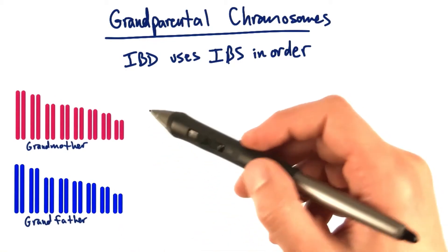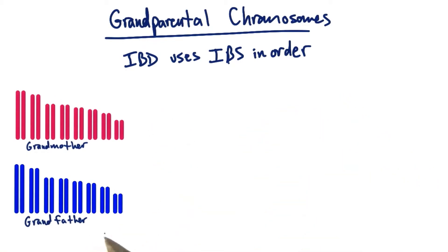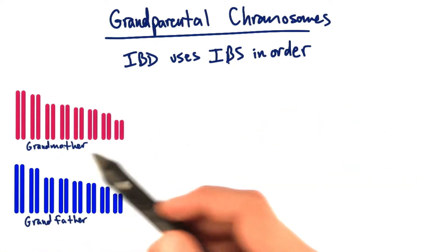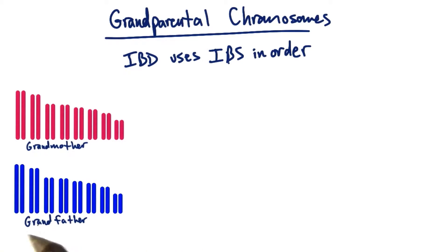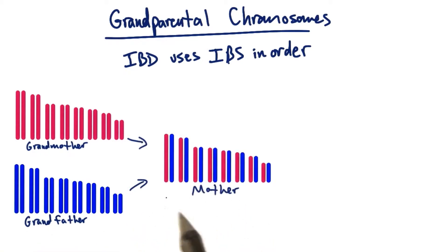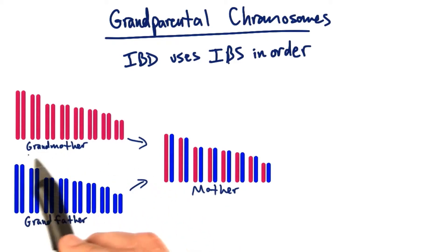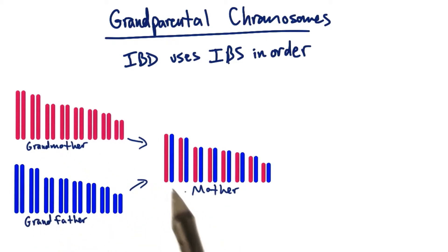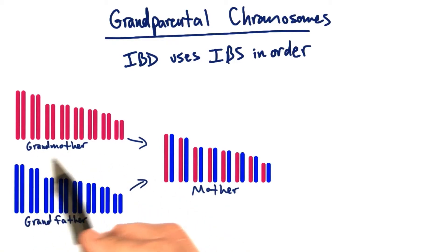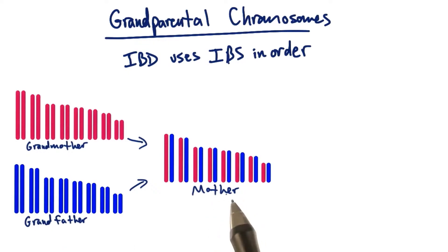For example, let's think about the chromosome pieces you inherited from your grandparents. Here we have your grandmother's chromosomes and your grandfather's chromosomes. Your mother has her own set of chromosomes — she got half from her mother and half from her father.